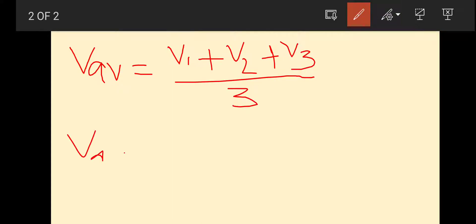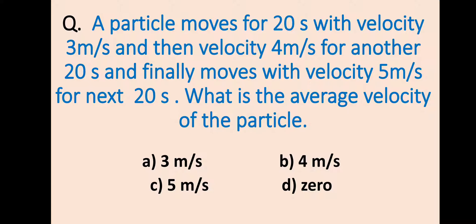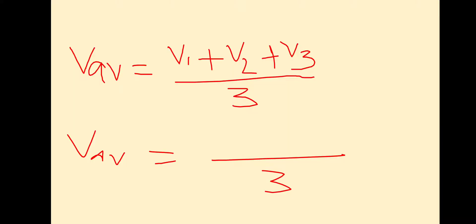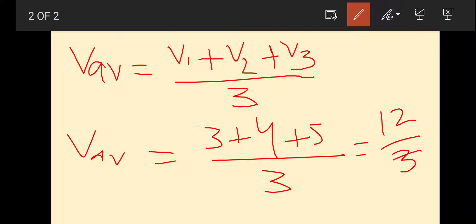The average velocity of the particle will be (3 + 4 + 5) / 3 = 12 / 3 = 4. So the average velocity will be 4 meter per second.